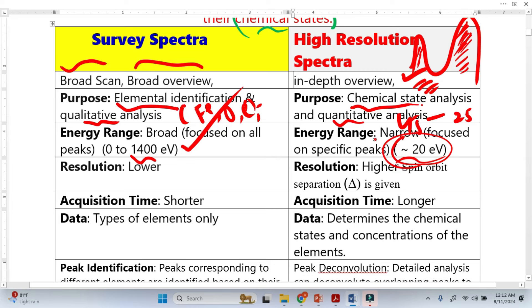The resolution is lower here, so we cannot differentiate. Here the resolution is very higher, so we can see this suppression, the peak suppression. This delta is basically the spin orbit suppression.